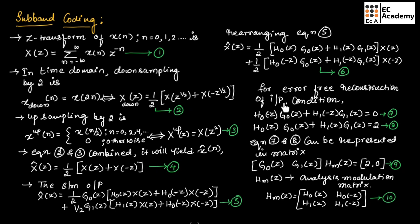For error-free reconstruction of the input, the conditions are: H0(−z)·G0(z) + H1(−z)·G1(z) = 0, and H0(z)·G0(z) + H1(z)·G1(z) = 2. Equations 7 and 8 can be represented in matrix form as [G0(z), G1(z)]·HM(z) = [2, 0], where HM(z) is the analysis modulation matrix given by: HM(z) = [[H0(z), H0(−z)], [H1(z), H1(−z)]].